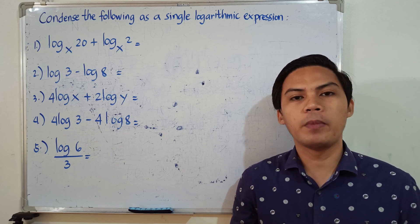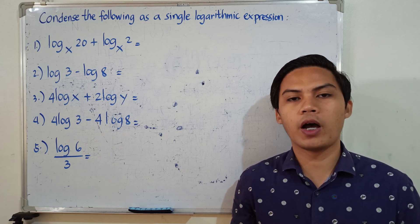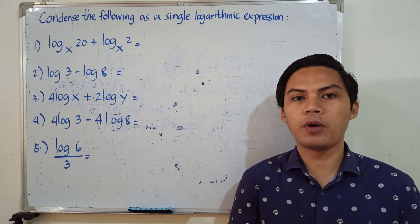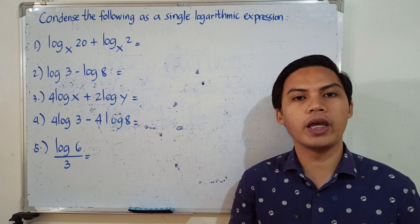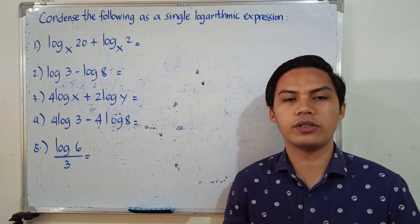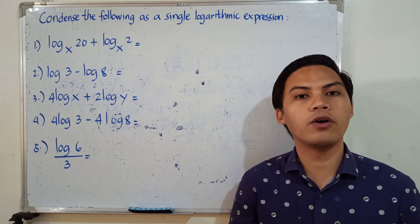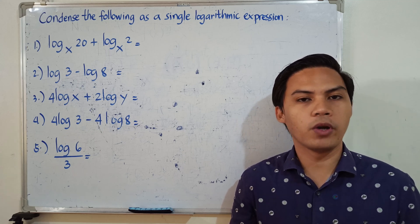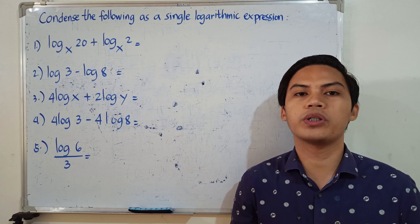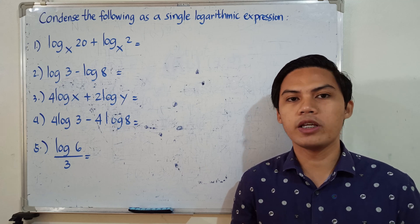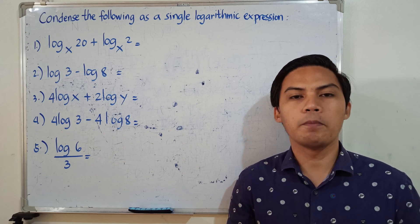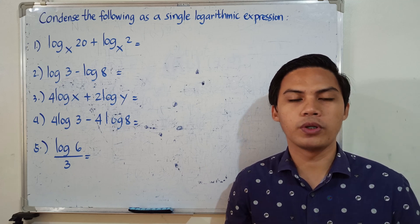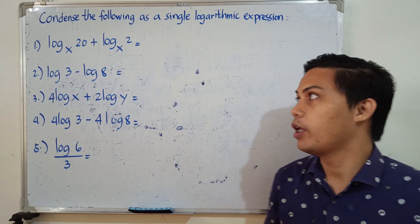We're still going to make use of our properties and laws. In our laws of logarithm, we have the product rule, the quotient rule, and the power rule. So, let's have some examples.